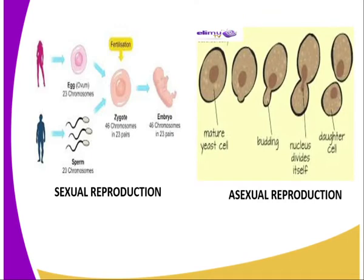Sexual reproduction involves the fusion of the male and the female gametes to form a zygote. A fusion of the nuclei of the male and the female gametes is known as fertilization. Asexual reproduction does not involve gametes; instead, parts of the mature organism may develop to form new individuals.